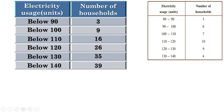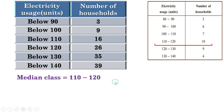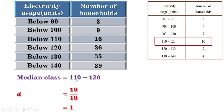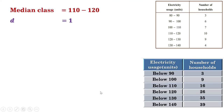Below 110 there are 16 households and below 120 there are 26 households. That means the 20th household has electricity usage in between 110 and 120, so the median class is 110 to 120. The frequency of the median class is 10, and the width is 120 minus 110, or 10. Common difference is width divided by frequency, that is 10 by 10 or 1. Below 110 there are 16 terms, so the 17th term is the first term in the median class. Let us find the 17th term: it is 110 plus d by 2, that is 110 plus 1 by 2, or 110 and a half.